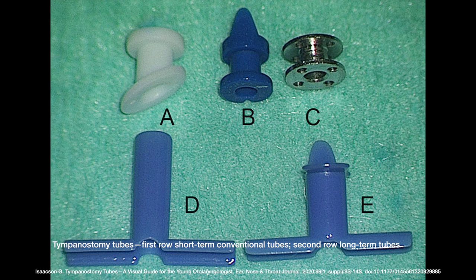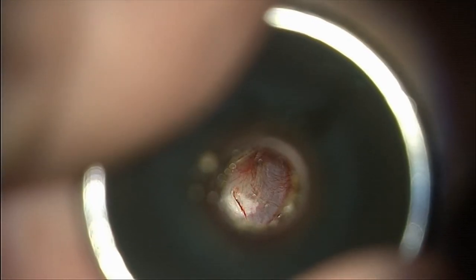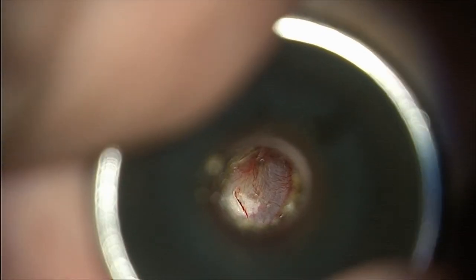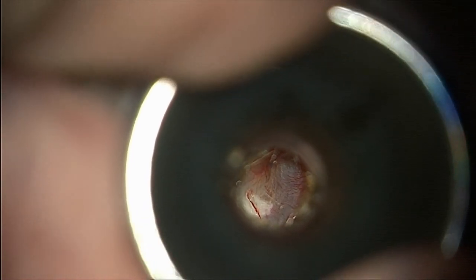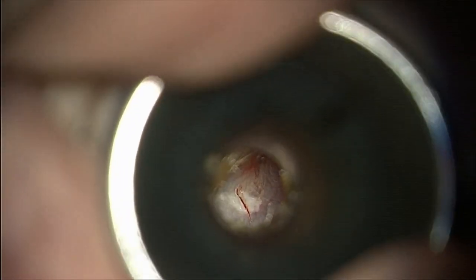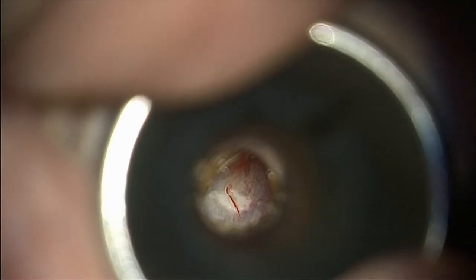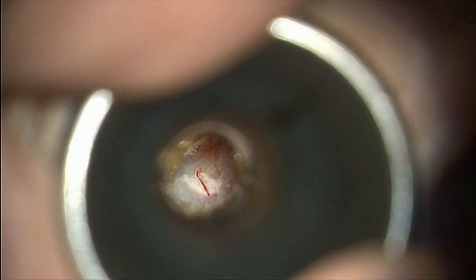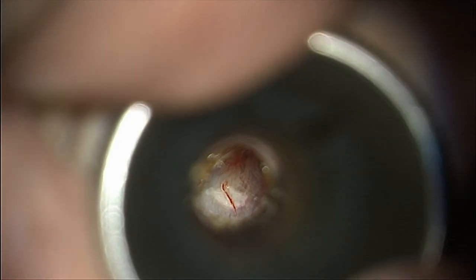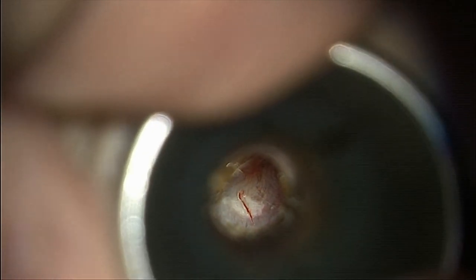The placement location of the myringotomy is often debated. In general, placing the myringotomy incision posterior and inferior is preferred, since there's no clear advantage to placing it elsewhere, and if there is a persistent perforation it's quite easy to repair trans-canal with a tympanoplasty.